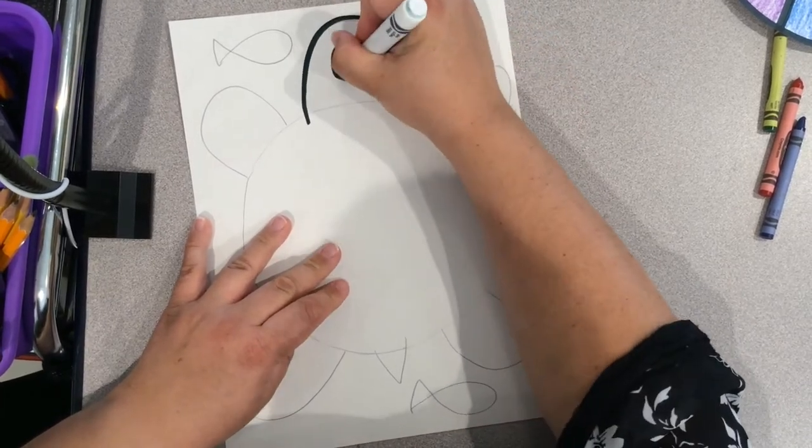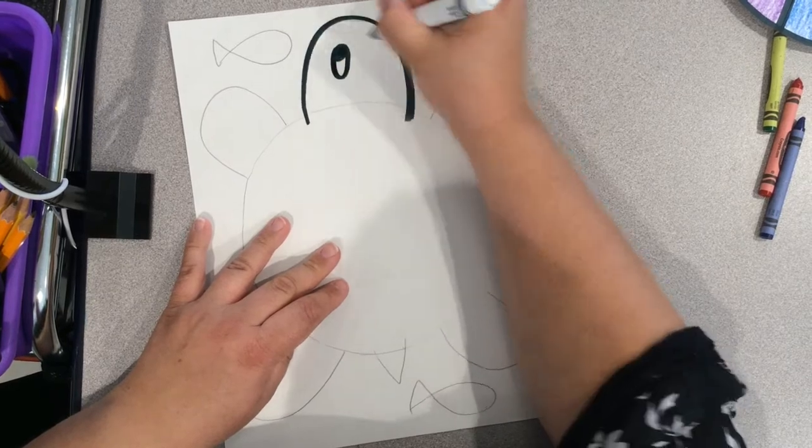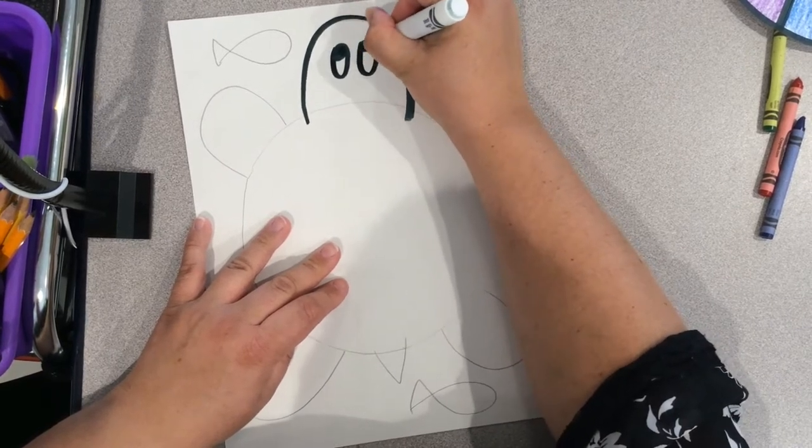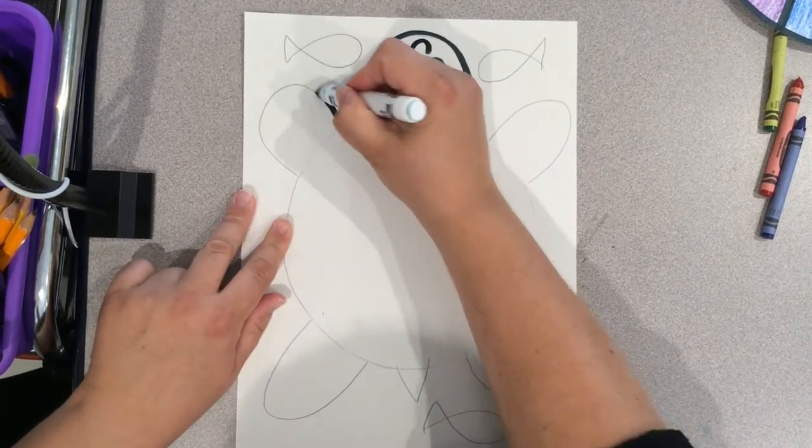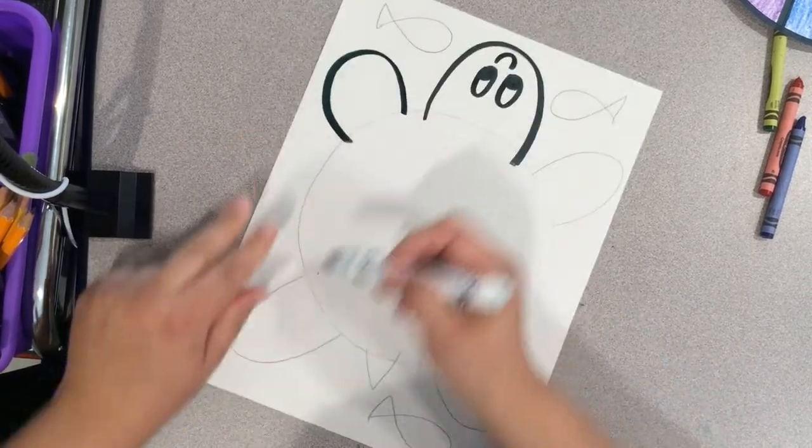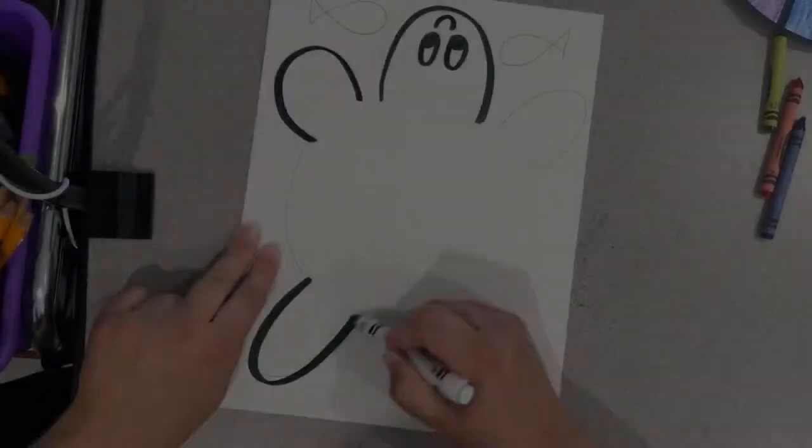And we're going to trace. Again, don't forget to draw into the inside of where that color wheel is going slightly, just so that you can be sure that all of your white spaces will be covered when we go to glue the actual color wheel on.